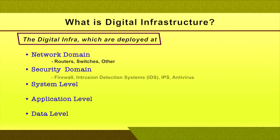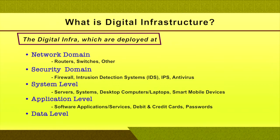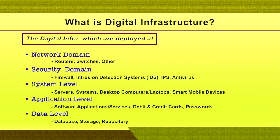Similarly, at the security domain, the devices are firewall, intrusion detection systems, intrusion prevention systems, antivirus, and so on. At the system domain, the infrastructure includes servers, desktop computers, laptops, smart mobile devices, and so on. At the application level, digital infrastructure refers to software applications, services, debit or credit card, passwords, etc. And at the data level, digital infrastructure refers to database storage repositories.